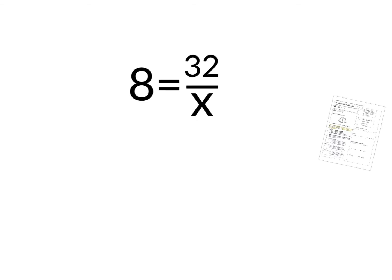What does it say? It's an equation that says 8 equals 32 divided by a number. So yes, you could do this in your mind if you're good at multiplying and dividing.